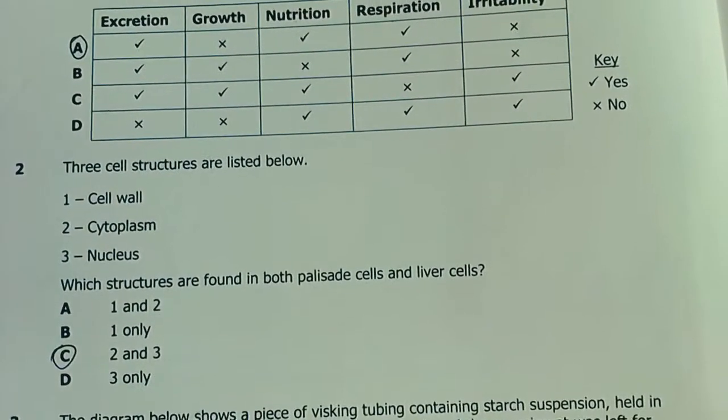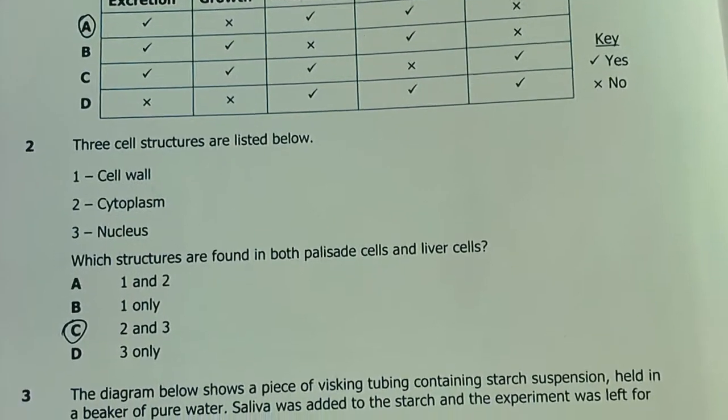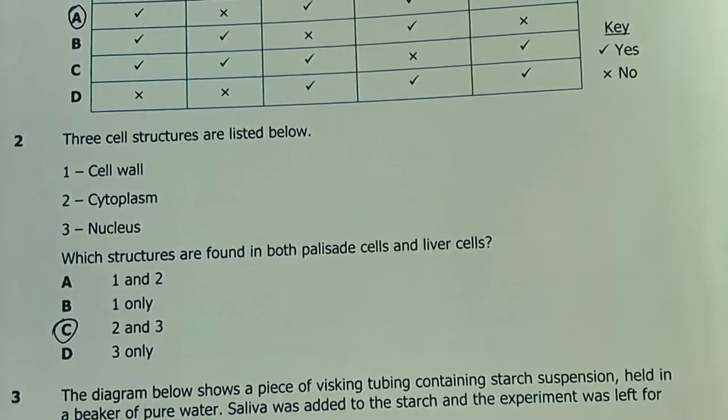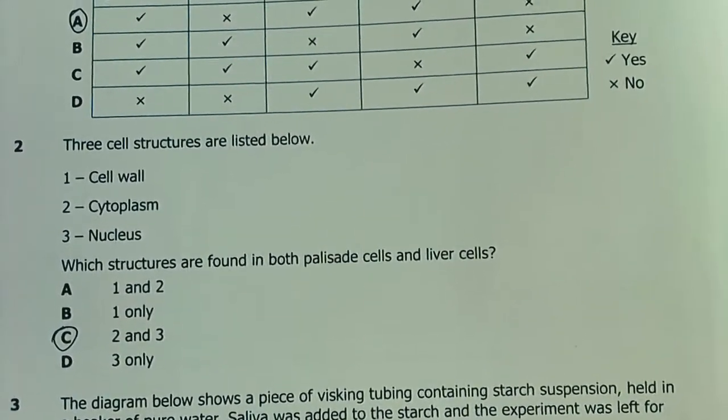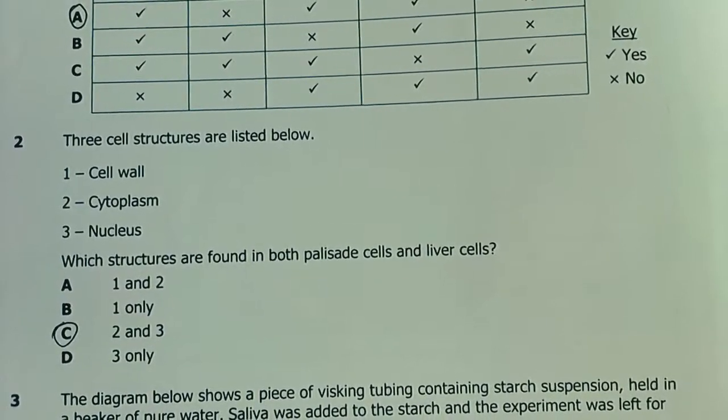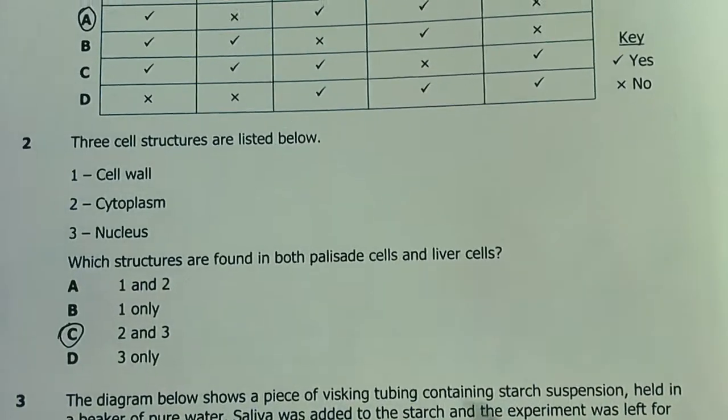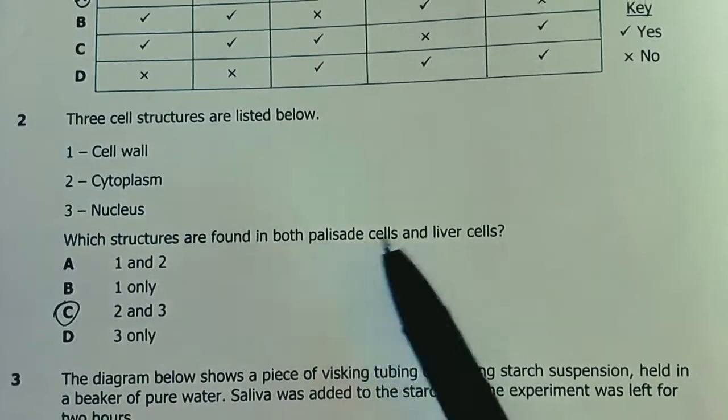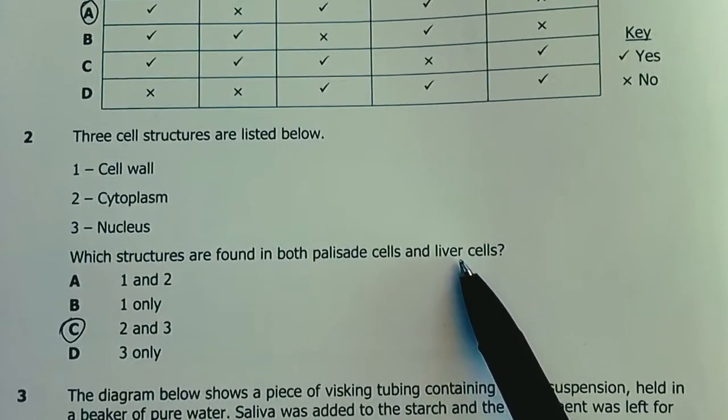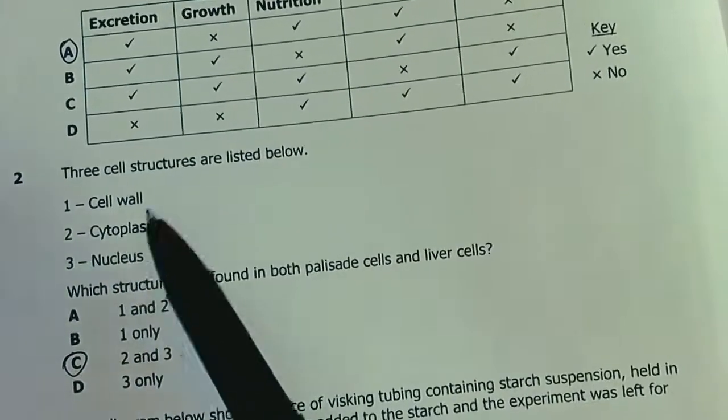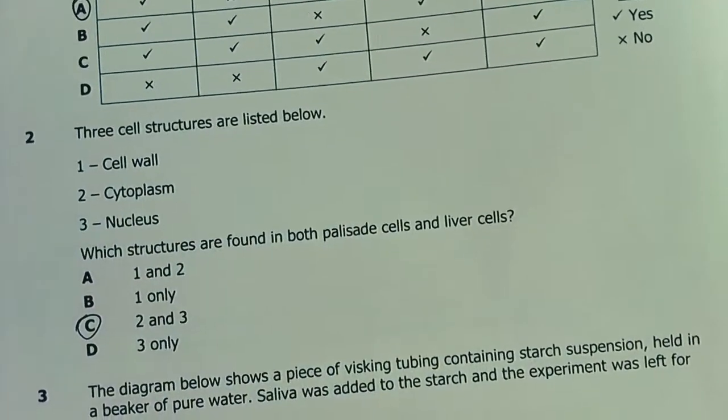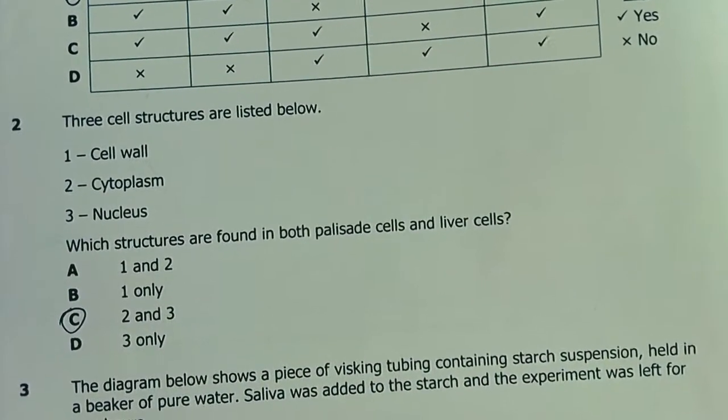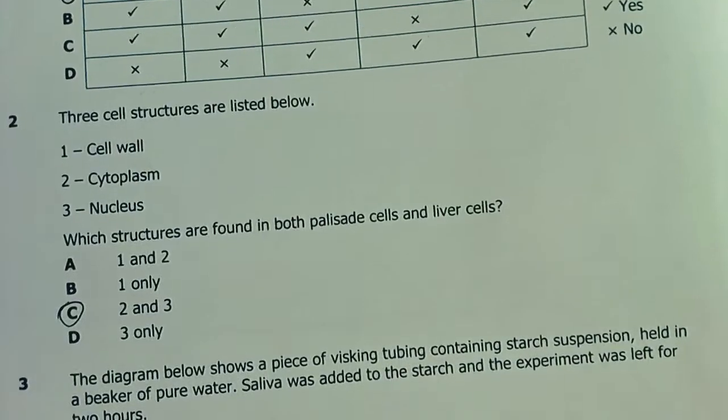Number 2. Three cell structures are listed: cell wall, cytoplasm, and nucleus. Which structures are found in both palisade and liver cells? Palisade are plant cells, these are animal cells. Cell wall is automatically off the list. So our answer is 2 and 3, cytoplasm and nucleus.